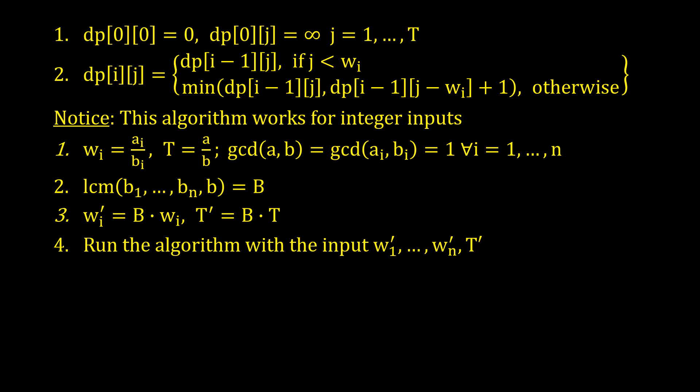We can make integers out of the rational numbers if we multiply by the least common multiple of the denominators. And then we can run the algorithm with these integers as input.